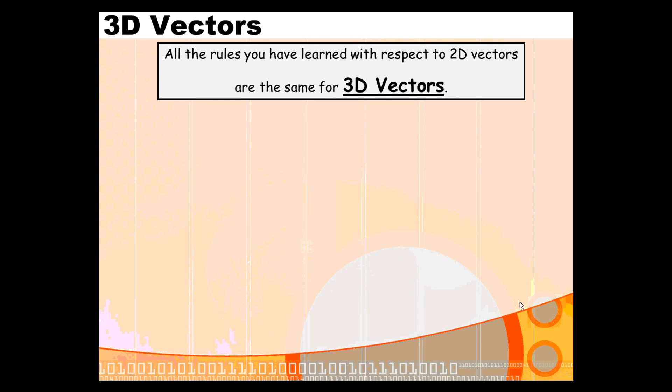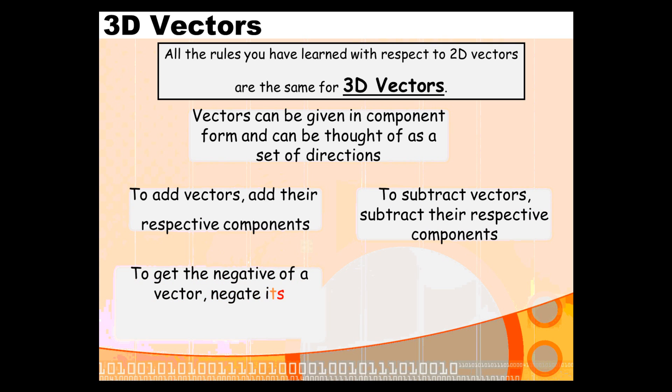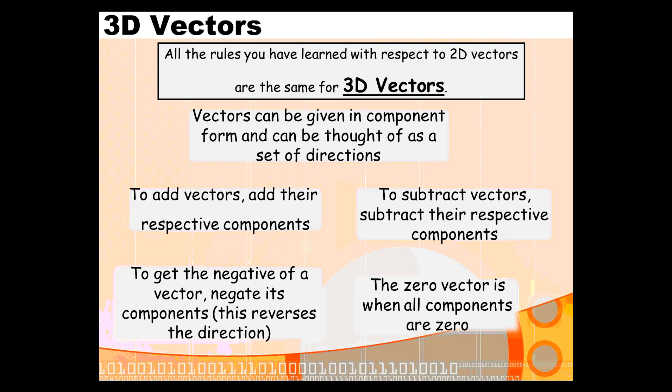When we're introducing you to 3D vectors, there's nothing to be worried about, because the rules are exactly the same as with 2D vectors. You just think of these vectors as a set of directions. To add them, you just add the components. To subtract them, you subtract the components. To get the negative of that particular vector, you just change each of the signs within the components, you negate them. And the zero vector in 3D is just the vector where all three components are zero.